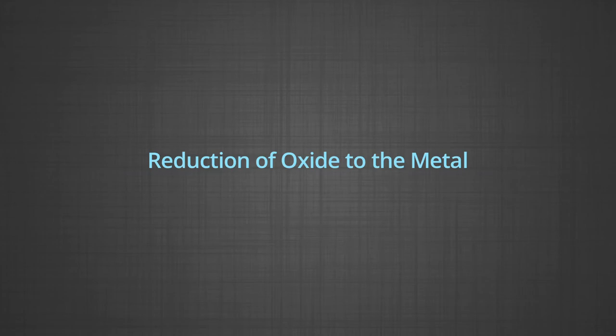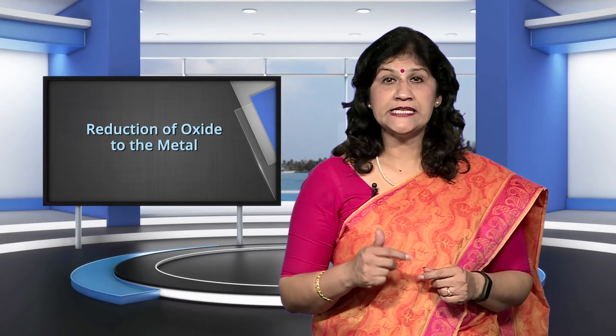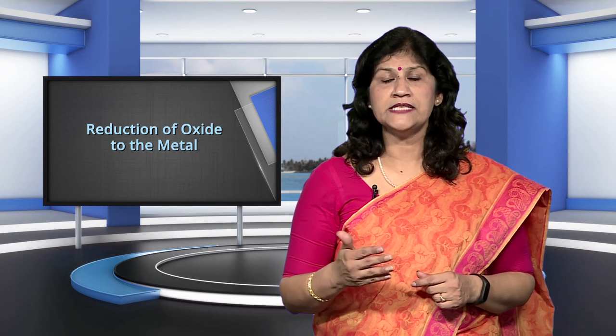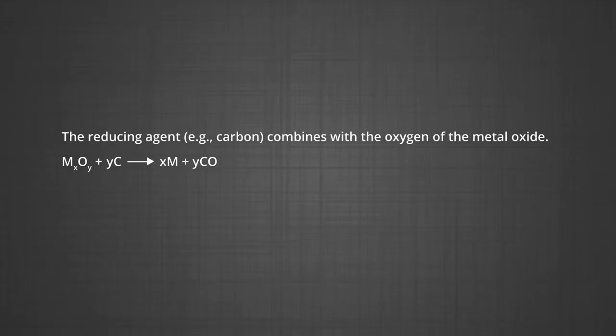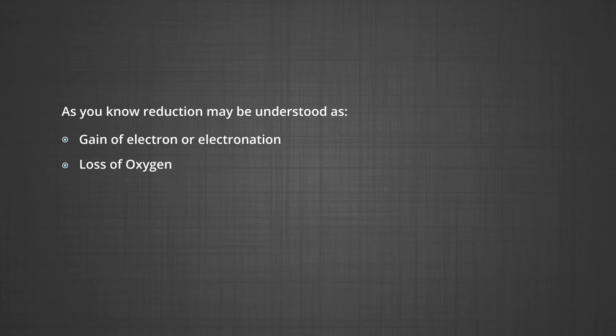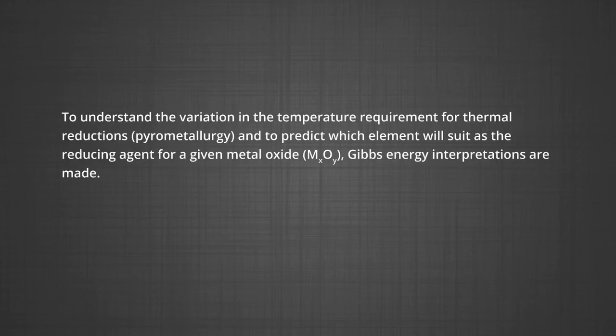Now let us see the reduction of oxide to metal. Reduction of the metal oxide usually involves heating it with some other substance acting as a reducing agent, which may be carbon or carbon monoxide. The reducing agent, for example carbon, combines with the oxygen of the metal oxide. Some metal oxides get reduced easily, while others are very difficult to reduce. In any case, heating is required and this concept is called pyrometallurgy — the word 'pyro' comes from heat. To understand the variation in temperature requirement for thermal reductions and to predict which element will suit as the reducing agent for a given metal oxide, Gibbs energy interpretations are made.